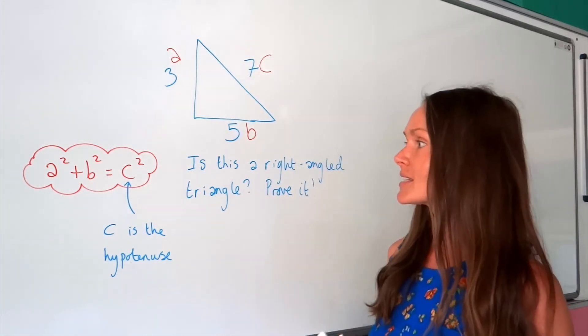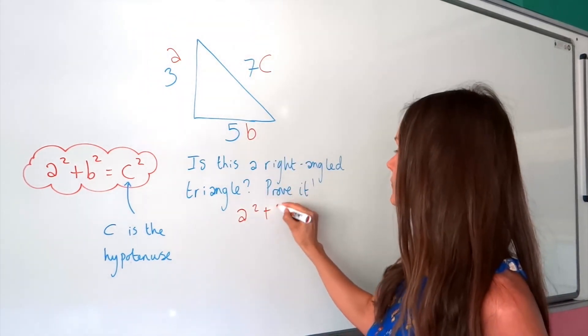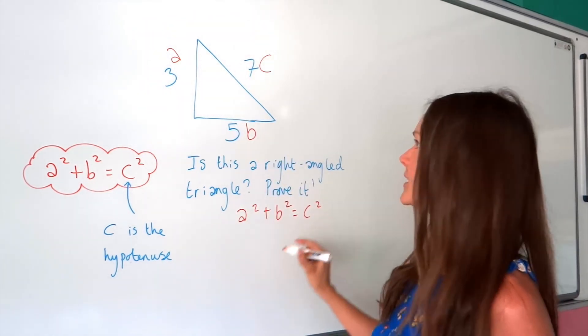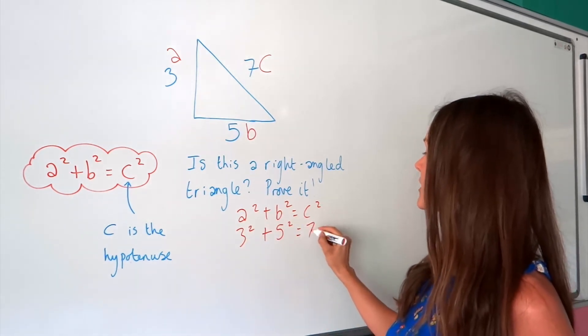Now, let's write out Pythagoras' theorem and see if it works for those numbers. So, I can substitute in A, which is 3, B, which is 5, and C, which is 7.